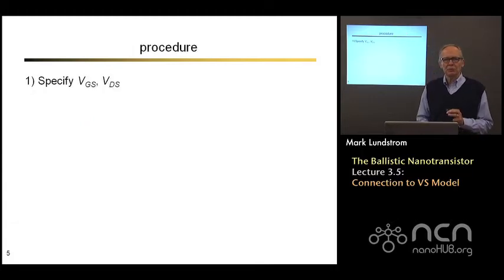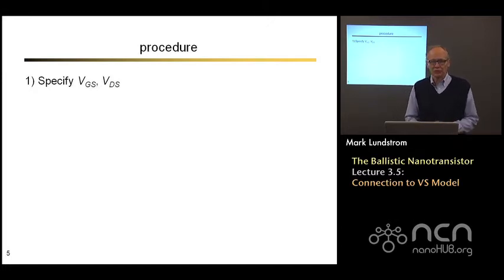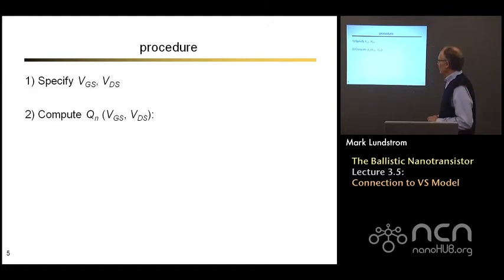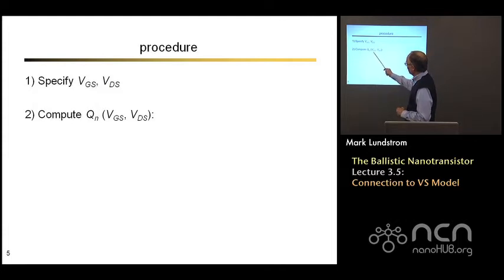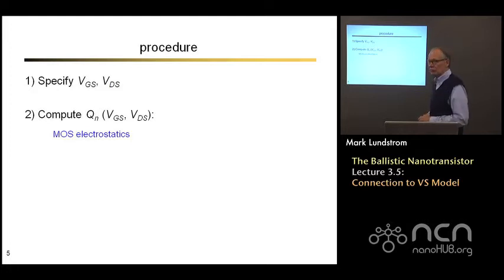So how would you do this in practice if you wanted to include Fermi Dirac statistics? If we want to compute the IV characteristic, we would specify a gate voltage VGS and a drain voltage VDS. Let's say the source is grounded. First thing we would do is to compute the electron charge in the channel. We've seen how to do that last week from MOS electrostatics. Now we can account for the gate and we can account for DIBL. We can do that for sub-threshold or above-threshold.